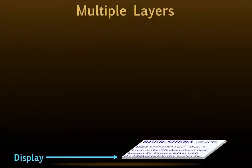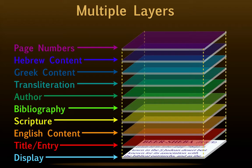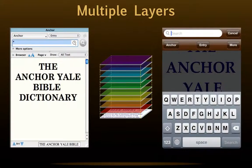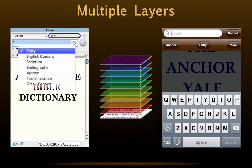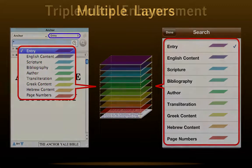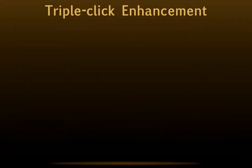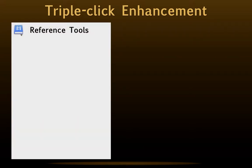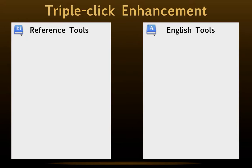Triple-click. In our last podcast, we explained how Accordance's modules have multiple layers, like this example from the Anchor Yale Bible Dictionary. These individual layers can be accessed in our desktop application and in our iOS app. It seemed to us that a user invoking triple-click is more serious about exploring a verse reference or a word, so Accordance should scan the resources more closely. The result: triple-click now scans multiple layers of each of the top 10 resources looking for the first hit. Triple-clicking a verse reference will search both the reference and scripture fields. The reference is the main entry, and the scripture field contains all other Bible references scattered throughout the tool's content.